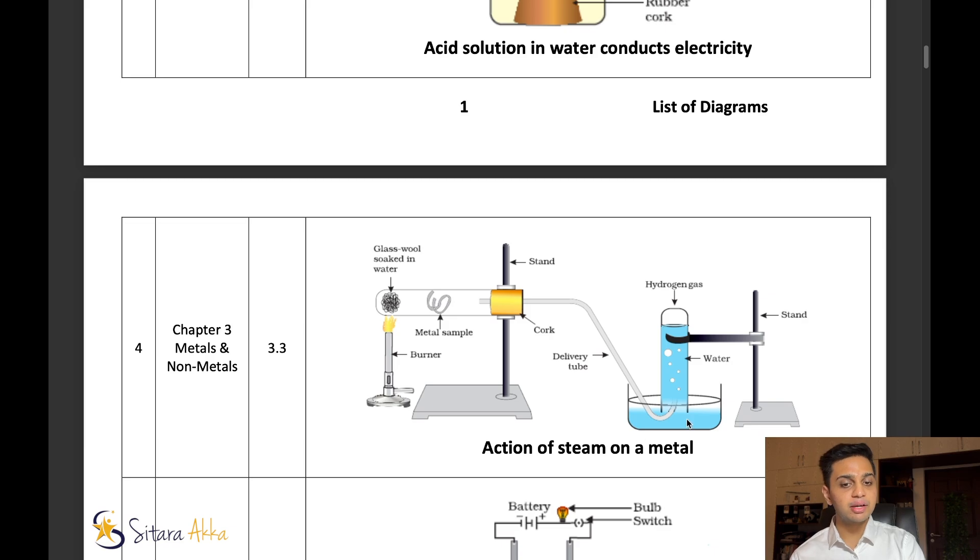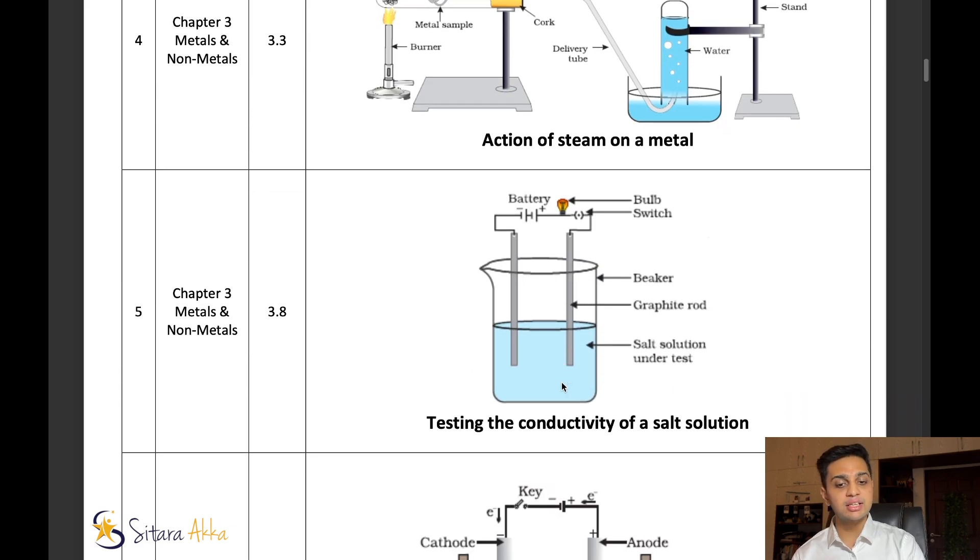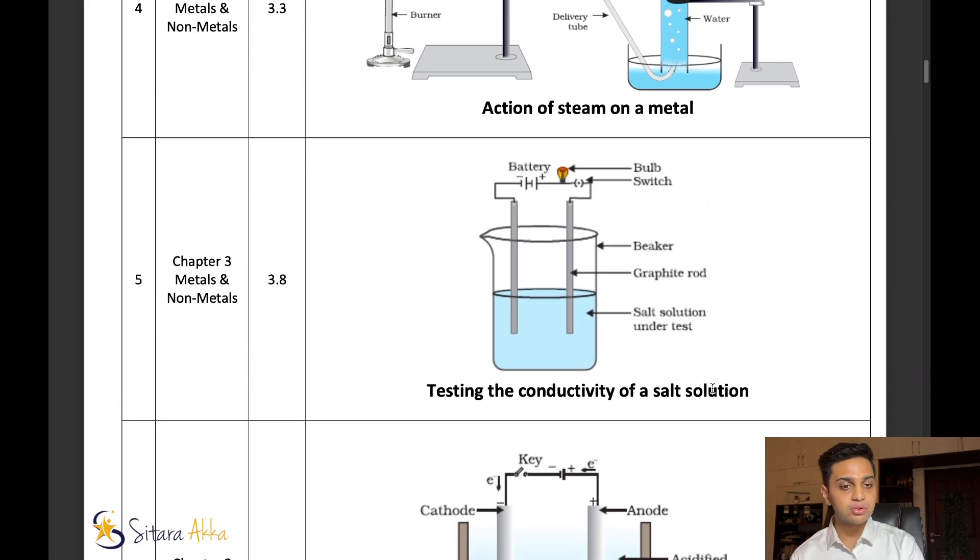Next diagram, action of steam on a metal. This diagram can be asked in the exam, and sometimes they also ask us to label the gas over here, which is hydrogen gas being evolved in this process. Next, testing the conductivity of salt solution. In this, you have to understand that there is a graphite rod, and you also have to label the salt solution being tested.